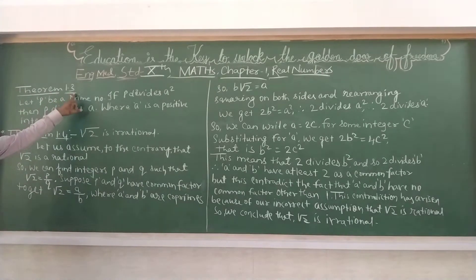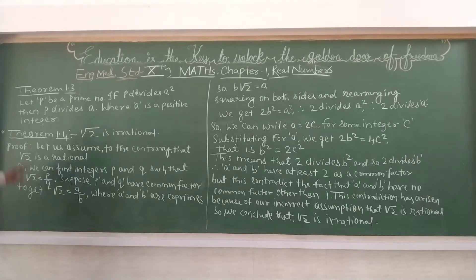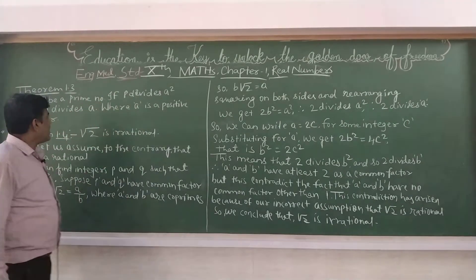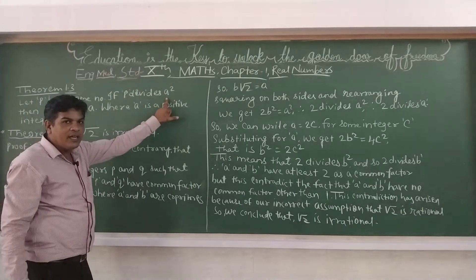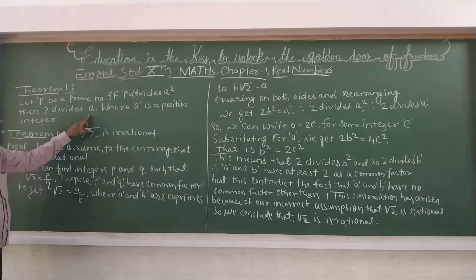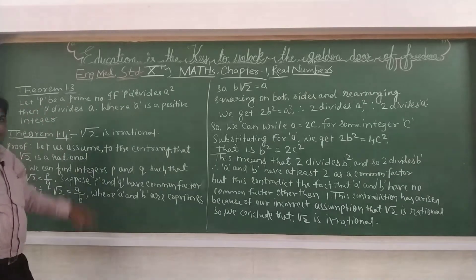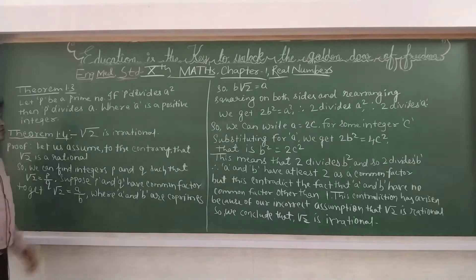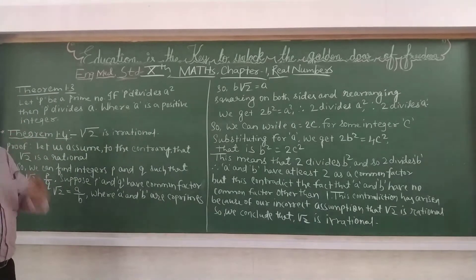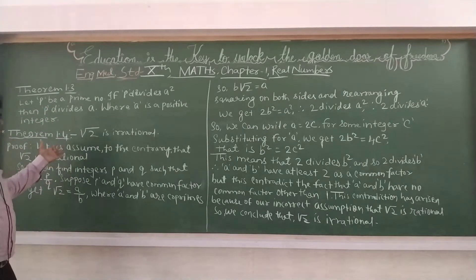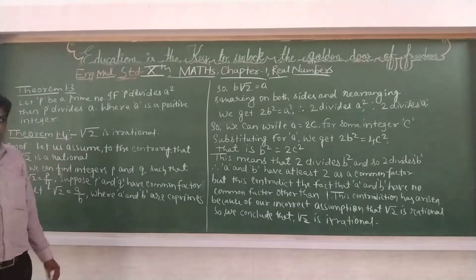So Theorem 1.3. At first we will study about Theorem 1.3, uske baad hum aage cover karenge. Let P be a prime number. Agar P ek prime number le lenge. If P divides A square, agar P, A square ko divide karta hai, to P, A ko bhi divide karega, where A is a positive integer. So yeh tha aapka Theorem 1.3 — yeh aapko mind mein rakhna hai. In the next, we will use this in Theorem 1.4.